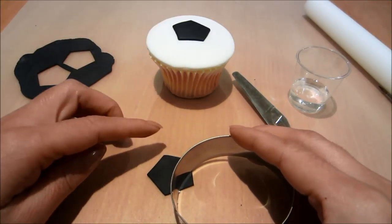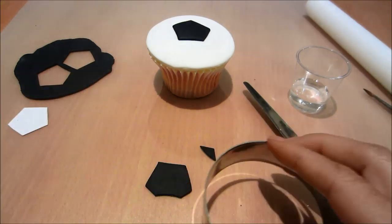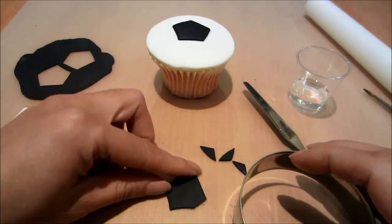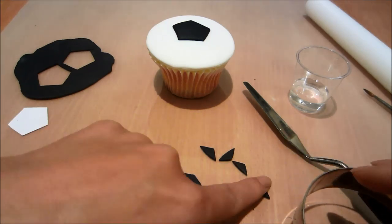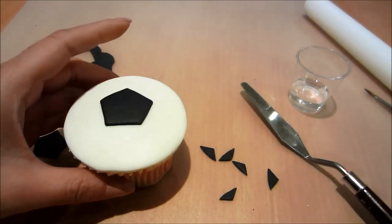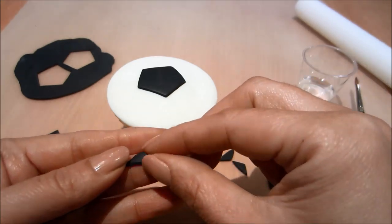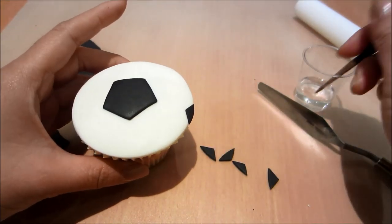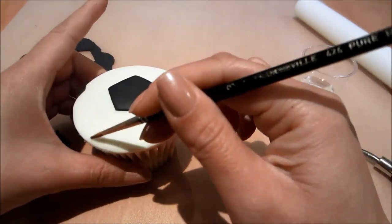And I've cut a second pentagon out. I'm just going to go around with my circle cutter and trim the points off. I'm going to glue each of these points around the cupcake to finish the look of the soccer ball.